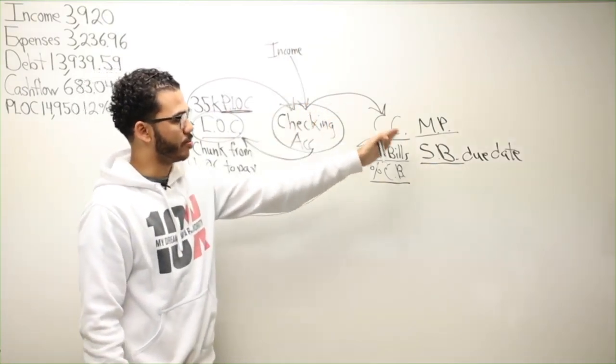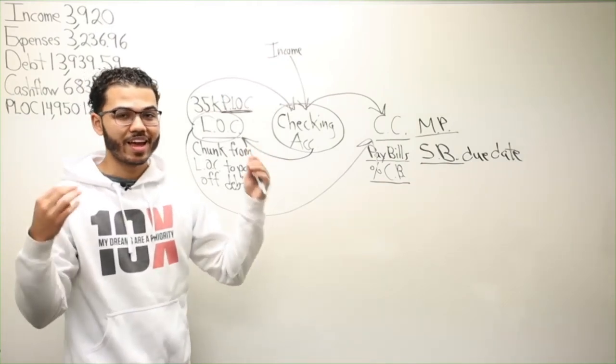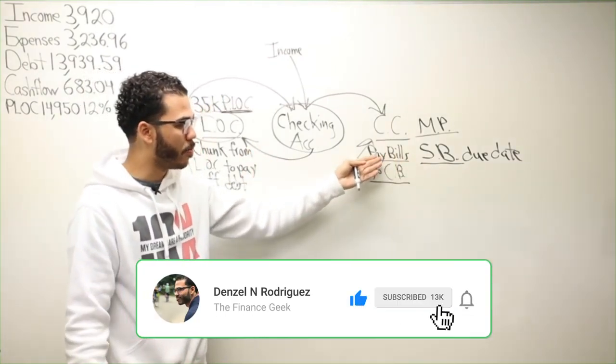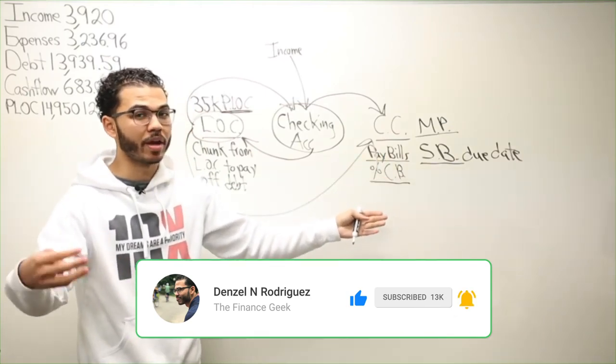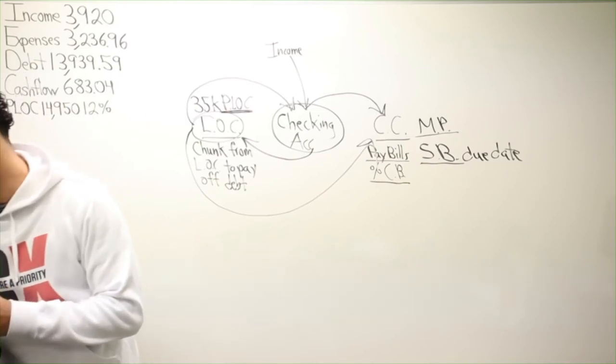You set up the automatic payment for the statement balance. This way you prevent ever having to get charged interest on money that you were already going to spend anyways. We don't want to incur any extra fees there.